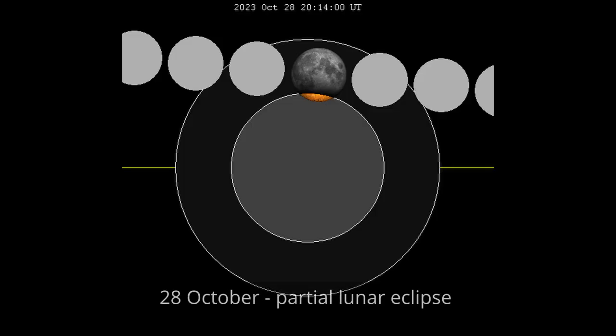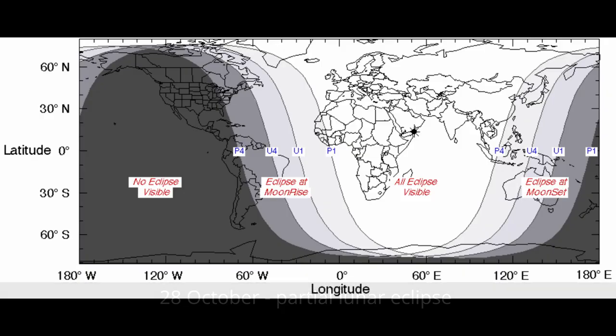Because they always come in pairs a few weeks later when it is a full moon, we have a partial lunar eclipse that's visible from Europe, Africa, Asia and just about touches the maritime provinces of Canada.